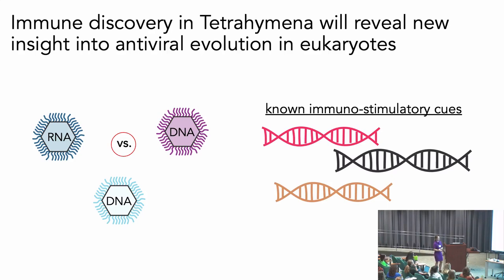I'm also taking approaches that don't rely on virus discovery. One of those is using what we think are probably known immunostimulatory cues — for example, the recognition of foreign nucleic acids is probably a conserved way to identify viruses in a virus infection. I'm currently dumping all of the virus-associated nucleic acid motifs I can find on these cells and looking for various readouts that way.